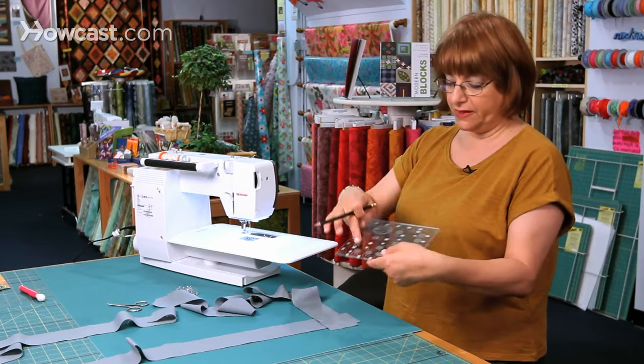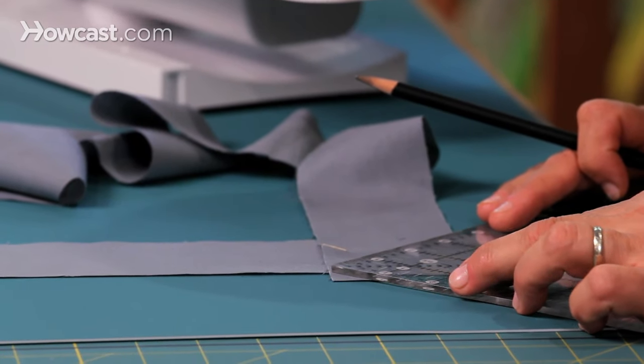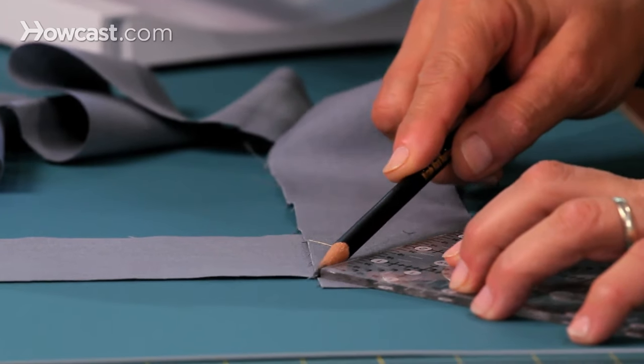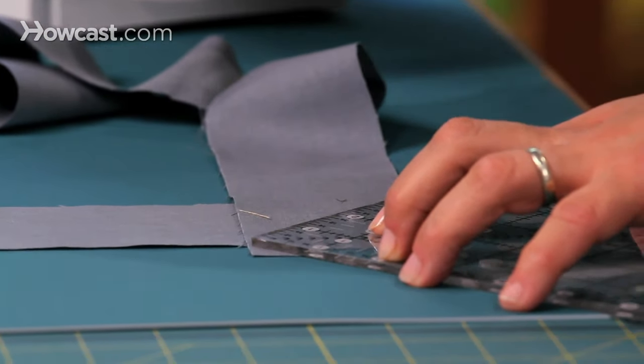Take a ruler with a 45 degree angle and line it up against the edge of the first strip. What you're going to do is get a nice diagonal line there.